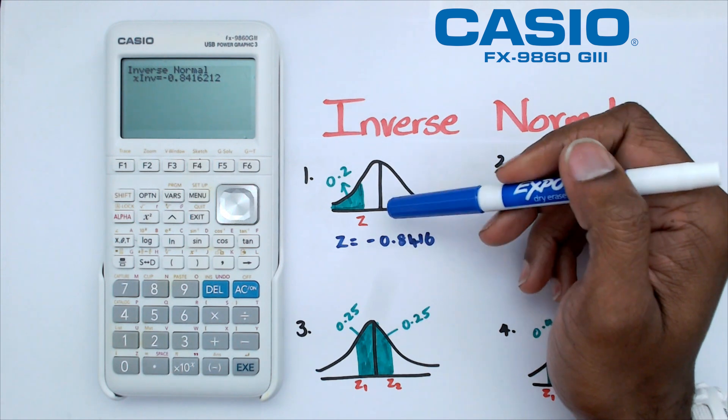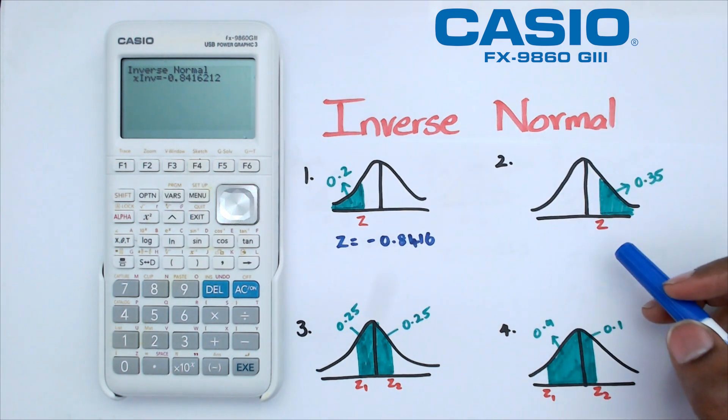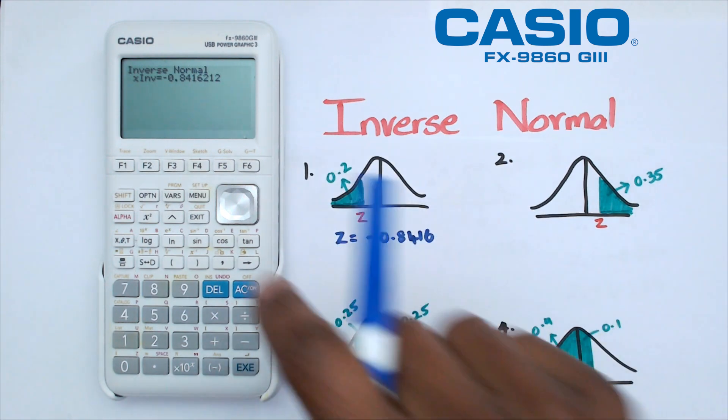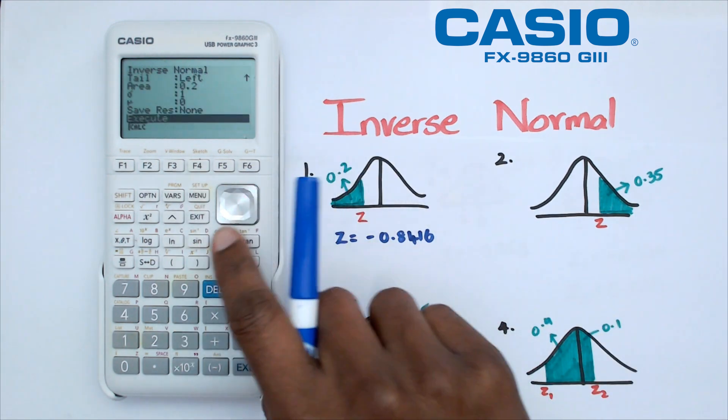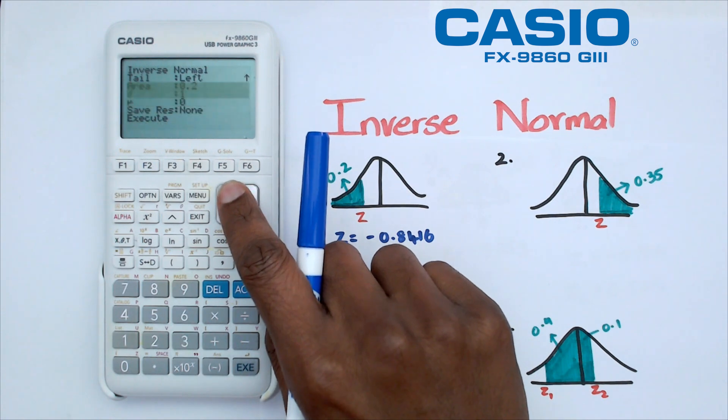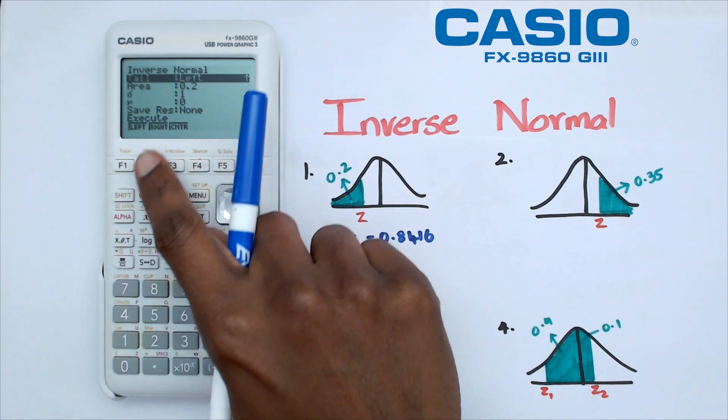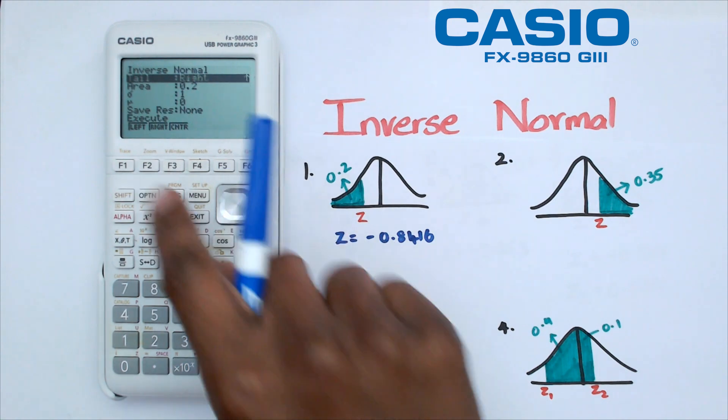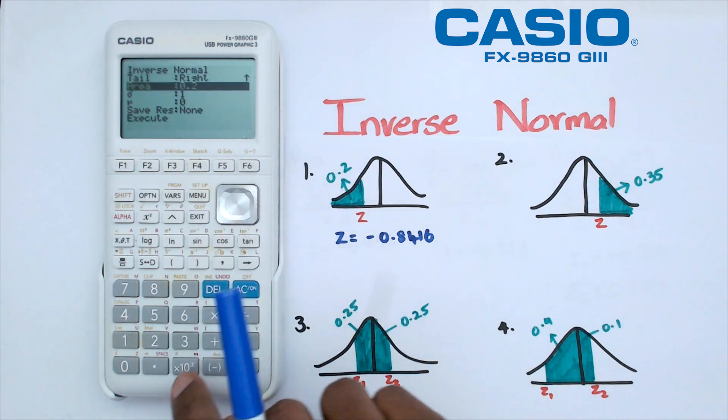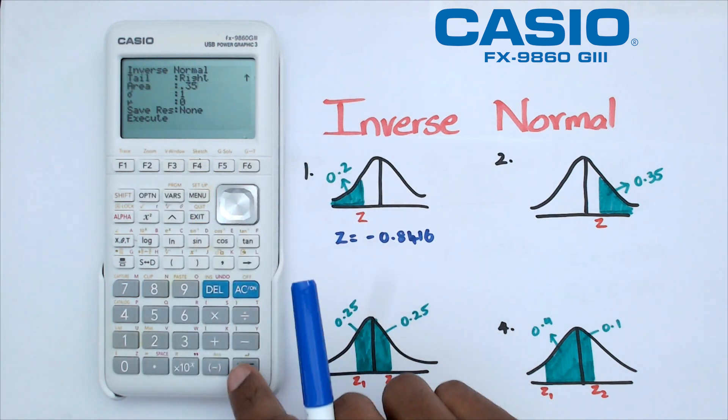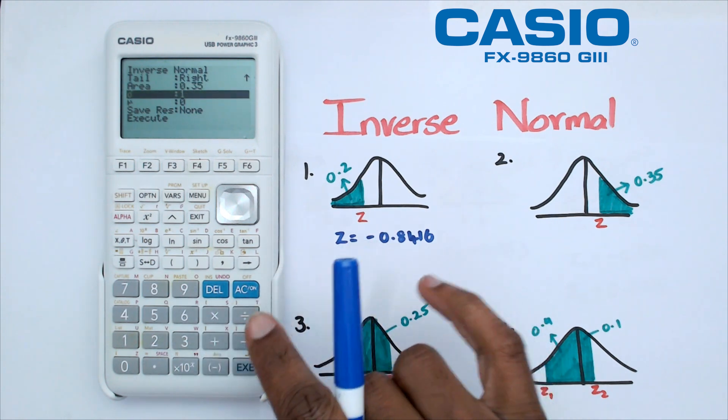Looking at question number 2, we've got 0.35 as the area, and that's actually on the right side there. We're going to exit this part and go back to the tail and change the tail from left to right. To click on right, we're going to do F2. Our area is changed now to be 0.35, keeping the standard deviation of 1 and mean as 0.